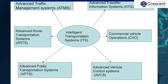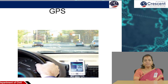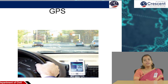ITS categories include Advanced Traffic Management System (ATMS), Advanced Traveler Information System (ATIS), Commercial Vehicle Operation (CVO), Advanced Vehicle Control System (AVCS), Advanced Public Transportation System (APTS), and Advanced Rural Transportation System (ARTS). GPS — you would have seen this in many cars today. The GPS unit is fitted to the car to tell you the direction, latitude, and longitude of a position.